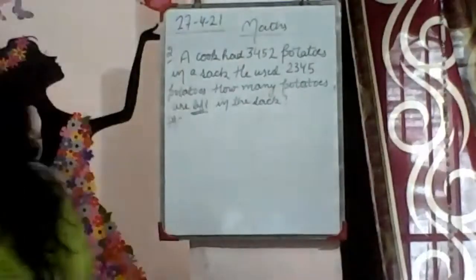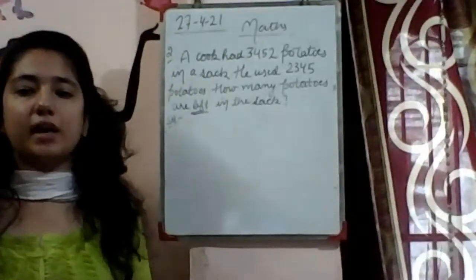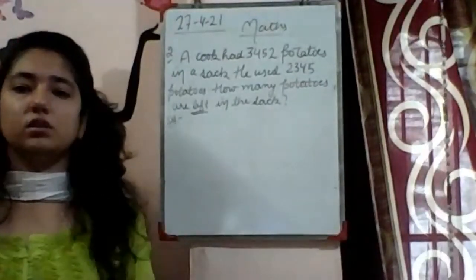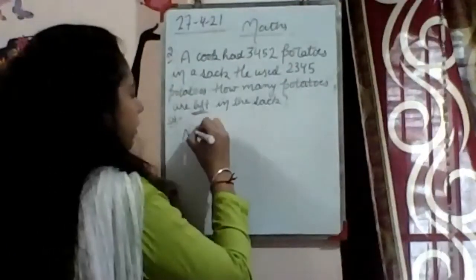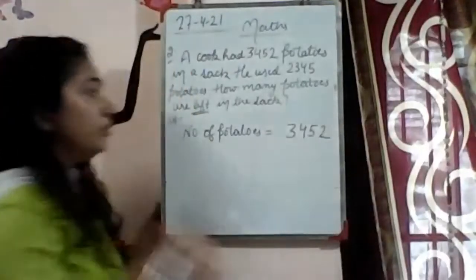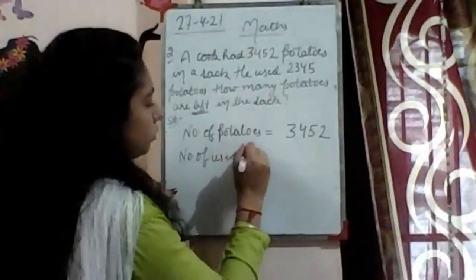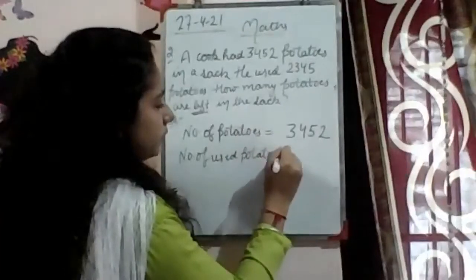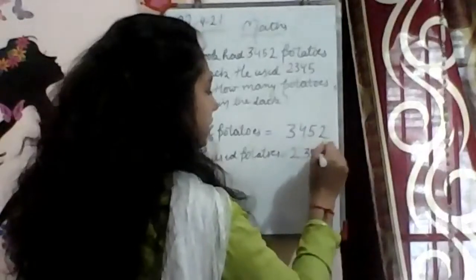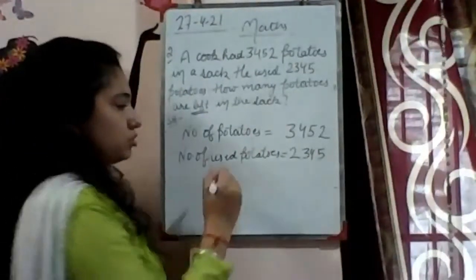Write the statement first. You can write 'a cook had potatoes' or 'number of potatoes' — whichever is easy for you. Number of potatoes: three thousand four hundred fifty-two. Then write 'number of used potatoes': two thousand three hundred forty-five. Then write 'number of potatoes left in the sack' or 'left potatoes.' You can write it in any way that makes sense. Let me know your answer.